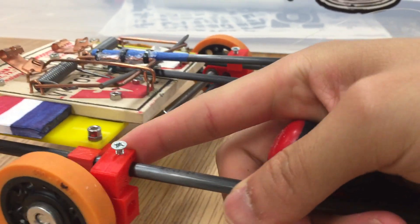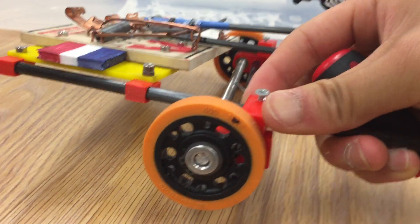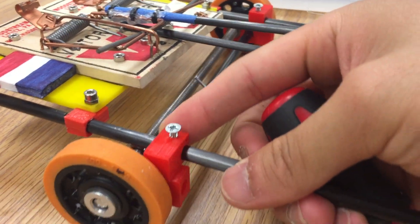Just untighten that screw and you could change the steering back and forth like this. Not that much, because a tiny bit goes a long way.